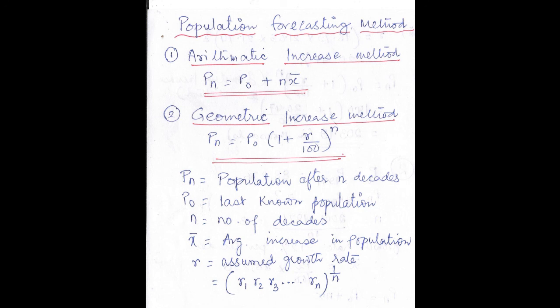Now let us see the meaning of the notations. Pn is the population after N decades — remember, N is the number of decades, not years; one decade equals 10 years. P0 is the last known population. N is the number of decades. X̄ is the average increase in population. Small r is the assumed growth rate, equal to (R1 × R2 × R3 × ... × Rn)^(1/N).